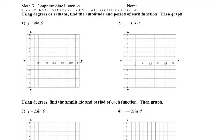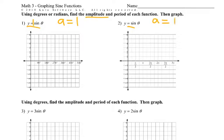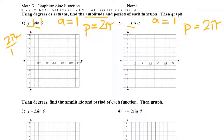On these first two problems we have the parent graph, which helps us see how it differs from the others. To find the amplitude of the parent graph: the amplitude is 1, because it's like there's a 1 out front. So for both of these, the amplitude is 1. The period — B is 1, so 2π divided by 1 is 2π. And there's no K, so we don't need to worry about midline shift.